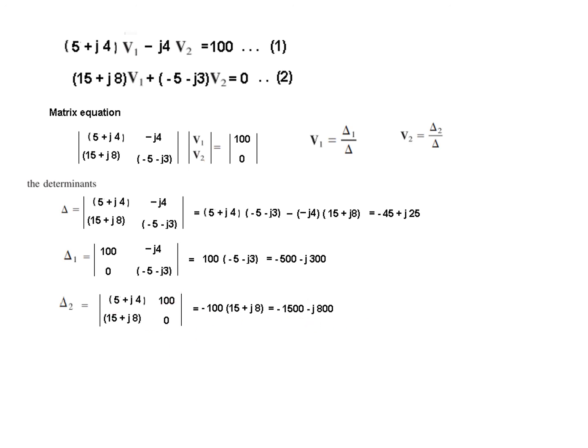And now we'll just plug in the values so V1 is delta 1 over delta, putting in the values and solving with the help of your calculator in complex mode you get this as V1 and similarly V2 is delta 2 over delta and this is the value of V2. Now these values are in phasor.